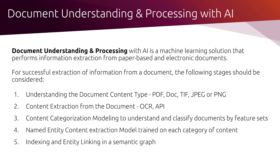Once you understand the document type, you can perform the appropriate document extraction on it — OCR if it's a PDF or scanned image, or APIs for vectorized PDF, Word, or Excel documents. Once you've extracted the content, the next thing is to categorize the contents according to category or document type — for example, sorting out your invoices and separating them from resumes, proposals, or receipts. We need to build a model that can understand all the different categories of documents, then build a specialized model for named entity extraction. Once you've extracted the contents in a structured format, you can keep it in your data store, index it, and build a knowledge graph around it if needed.